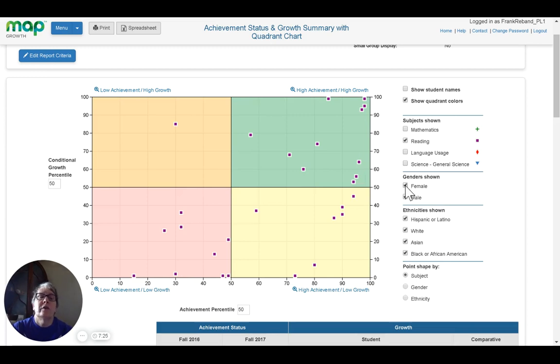I can show only male or only female. I can choose which ethnicities to show if that kind of data is something that you need to show. I can also change the point shapes if I need to, so that I can see the different shapes. In this case, we've got the shapes sorted by subject.